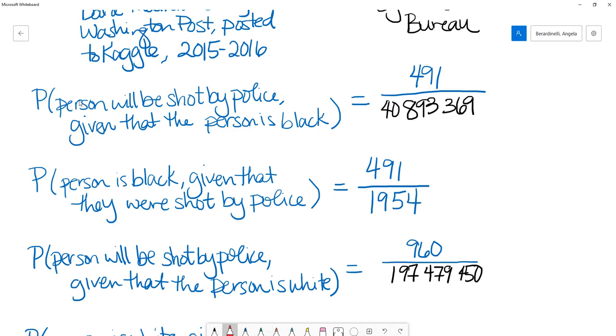So what that boils down to is we want the probability that a person will be shot by police given that the person is black. What we actually computed in the previous video was the probability that a person was black, given that they were shot by police. And while this is a completely valid thing to compute, and we based it on what I would say is pretty accurate data, it's not what we were really looking for.